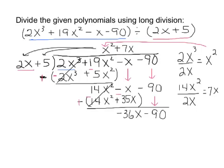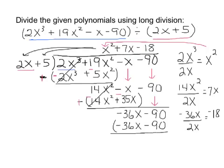So we'll take our lead term inside, which is now negative 36x, divided by the lead term outside, still our 2x, giving us negative 18. That goes up top. We distribute it to the two terms on the outside. 2x times the negative 18 is negative 36x. And negative 18 times the 5 gets us a negative 90. So it's looking like things are going to add to 0 and give us a remainder of 0.